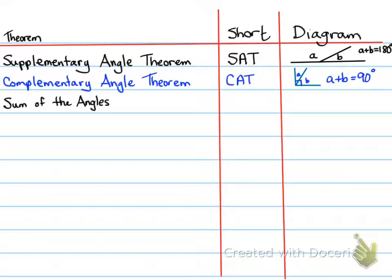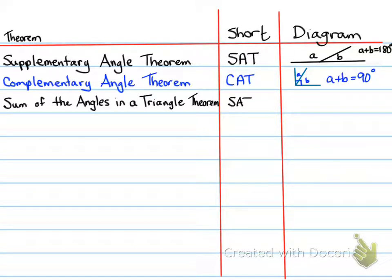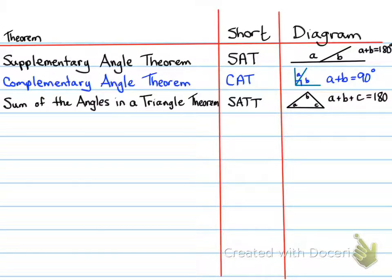Next is the Sum of the Angles in a Triangle Theorem, also known as SATT. This formula states that all the angles in a triangle — let's say A, B, and C — will add up to equal 180 degrees. You would have learned this theorem over the last few years.